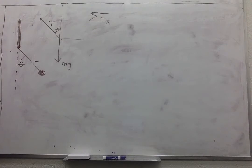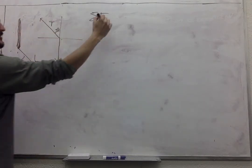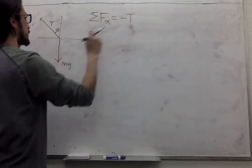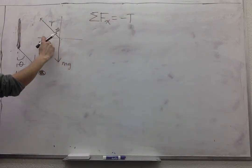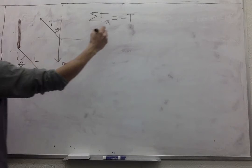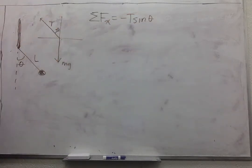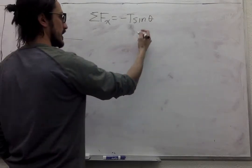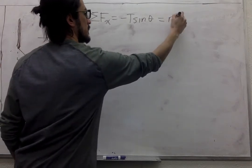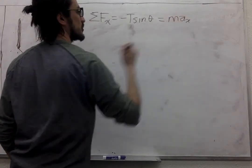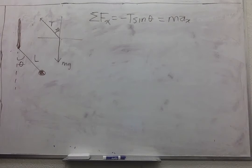So we look at the sum of forces in X and we have minus the tension sine theta. So this part over here. And that's it. That's the only force that we have in X. So that's equal to mass times acceleration in X.